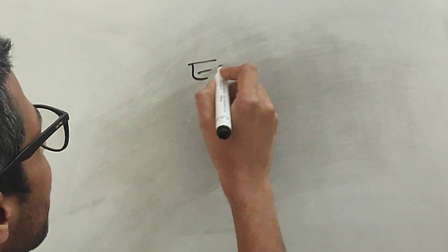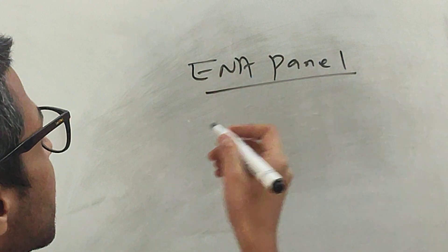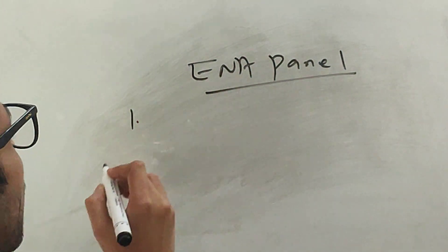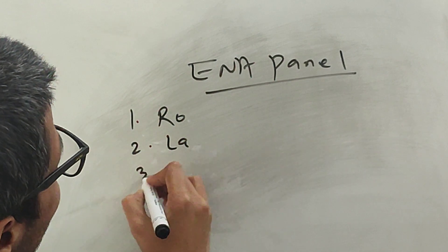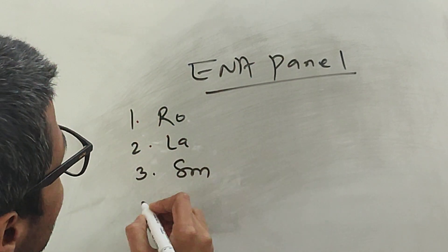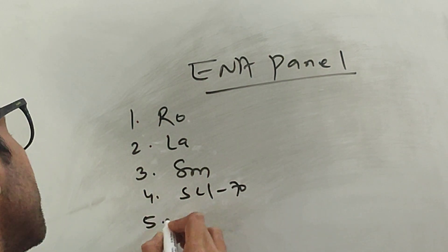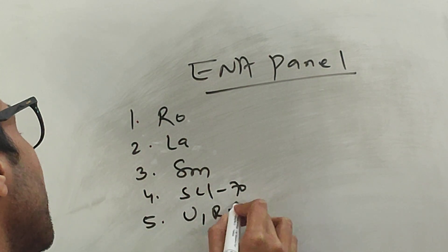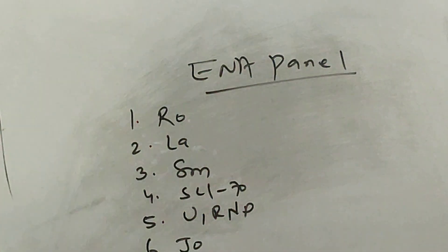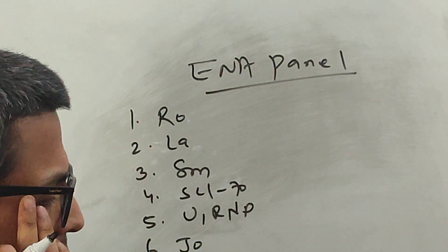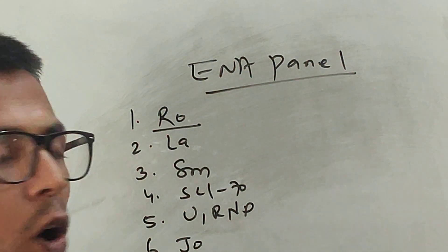What are the different antigens or antibodies that fall under this ENA panel test? Basically there are six total antigens: one is Ro, two is La, three is Smith anti-Smith antibody, four is Scl-70, fifth is U1RNP, sixth is Jo.